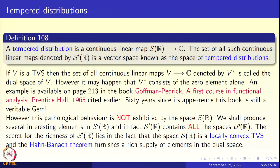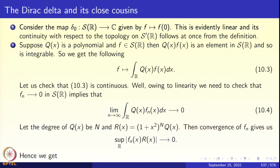That's a functional analysis explanation for why the space of tempered distributions is rich. For us, we are going to take a more concrete route and produce concrete examples. The most basic example is the Dirac delta and its close cousins: the derivative of the Dirac delta, the distribution PV(1/x), and the Heaviside and signum functions. Let us define the Dirac delta.